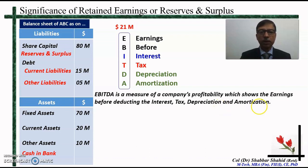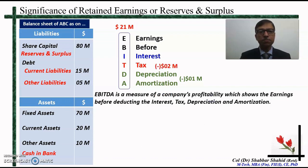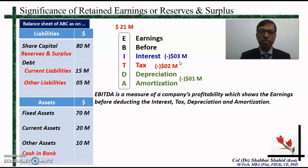Out of this 21 million dollars, let us say that 1 million dollars has gone towards depreciation and amortization. Another 2 million dollars goes towards payment of tax to the government. Another 3 million dollars goes towards payment of interest to the lenders. The company has a debt of 20 million, so this debt carries some annual interest that has to be paid to the lenders — 3 million is a hypothetical figure used for the sake of explanation.